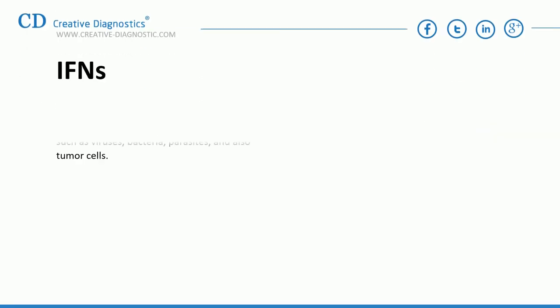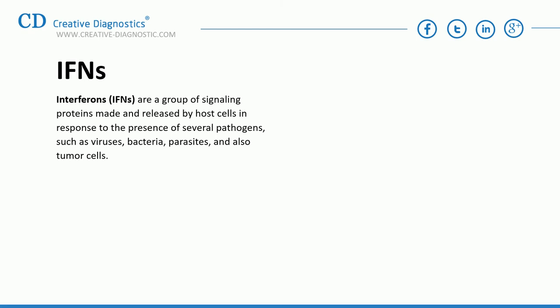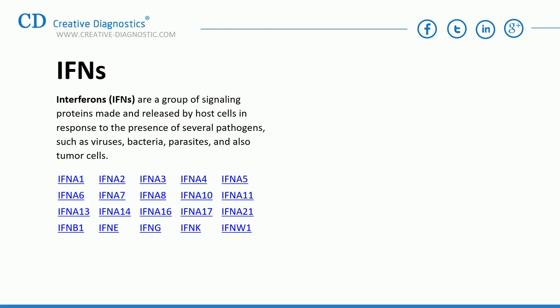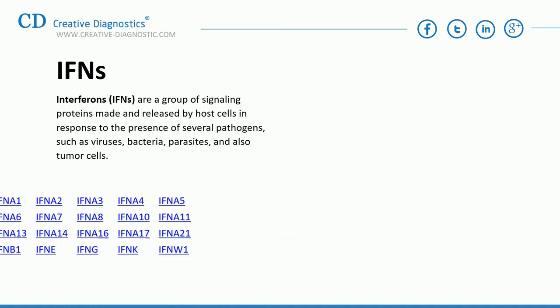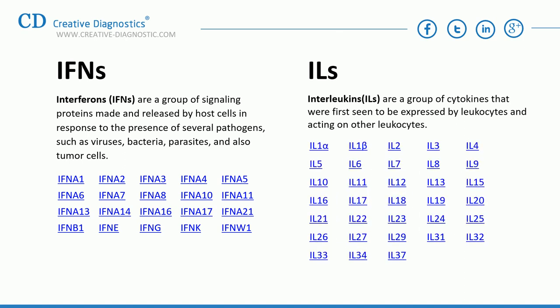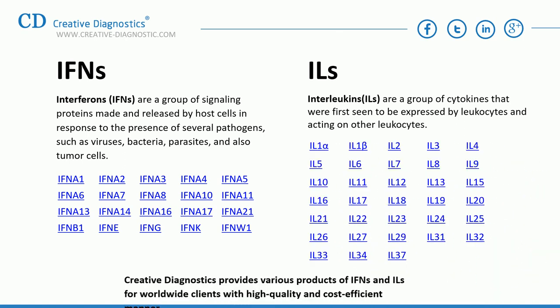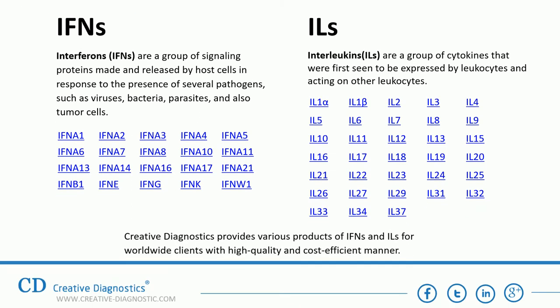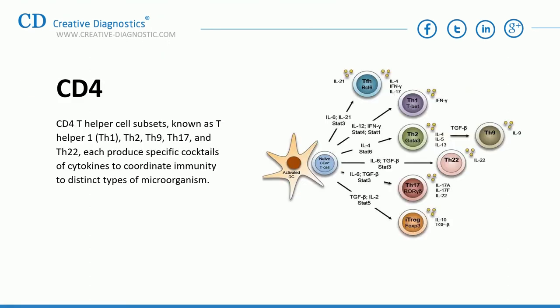Interferons (IFNs) are a group of signaling proteins produced in response to stimuli such as viruses, bacteria, parasites, and tumor cells. Interleukins (ILs) are also a group of cytokines. Creative Diagnostics provides various IFN and IL products for worldwide clients in a high-quality and cost-efficient manner. CD4 T helper cell subsets — known as TH1, TH2, TH9, TH17, and TH22 — each produce specific cocktails of cytokines to coordinate immunity to distinct types of microorganism.